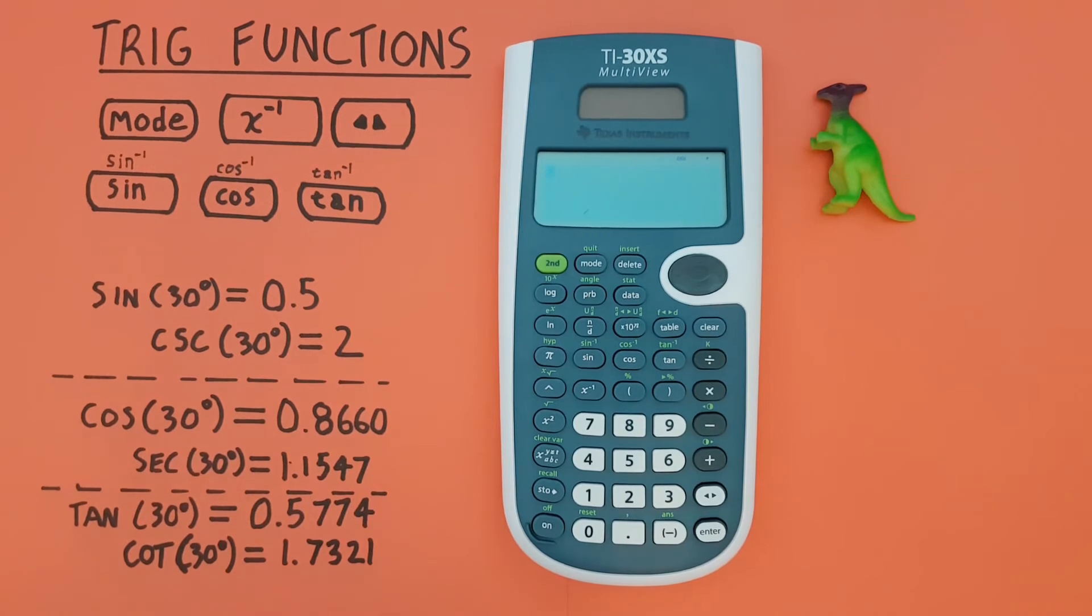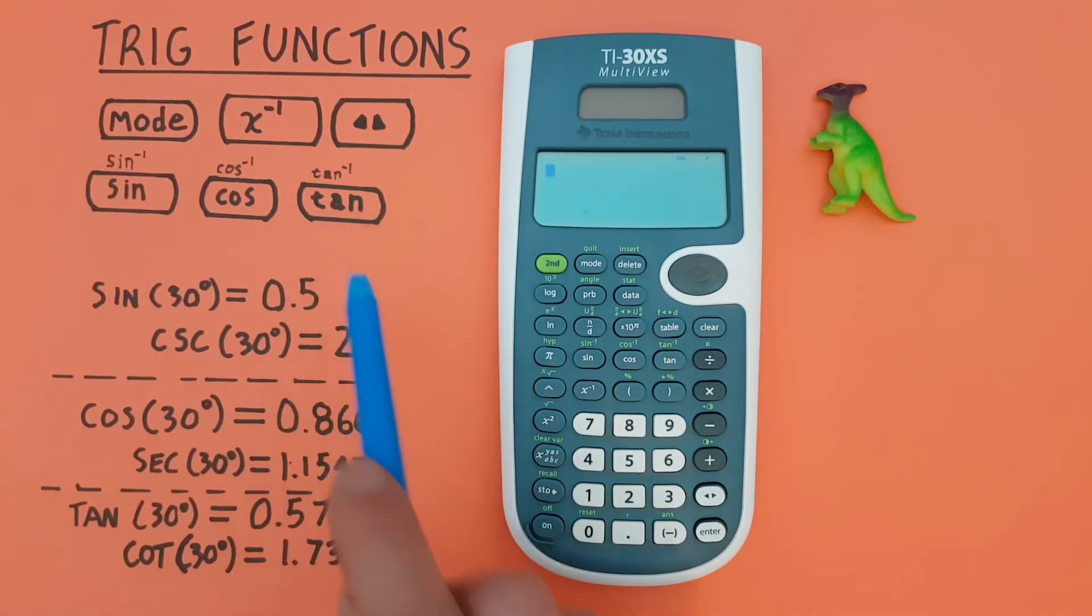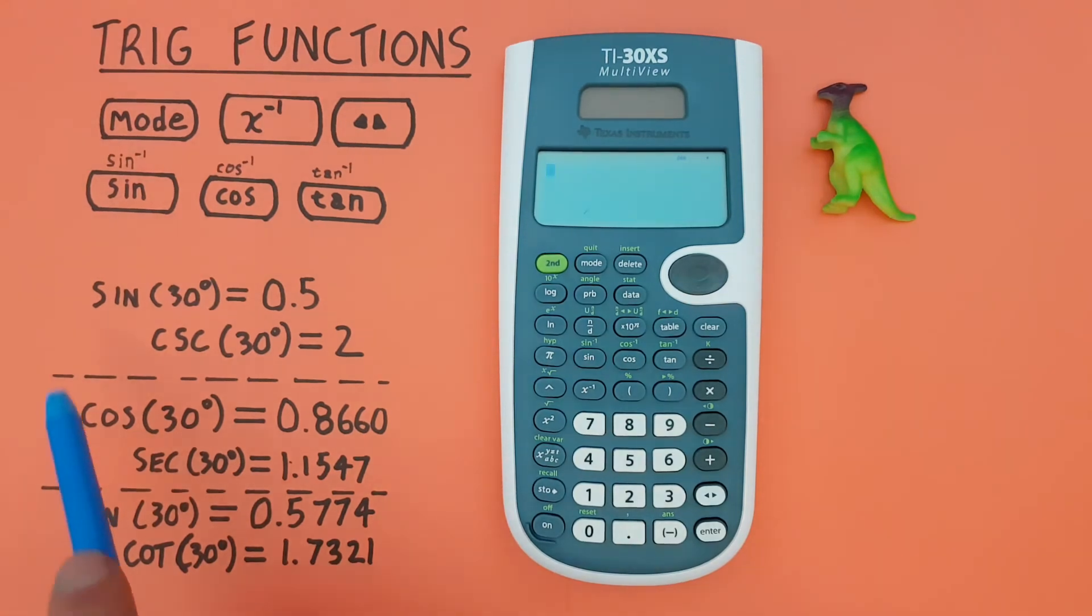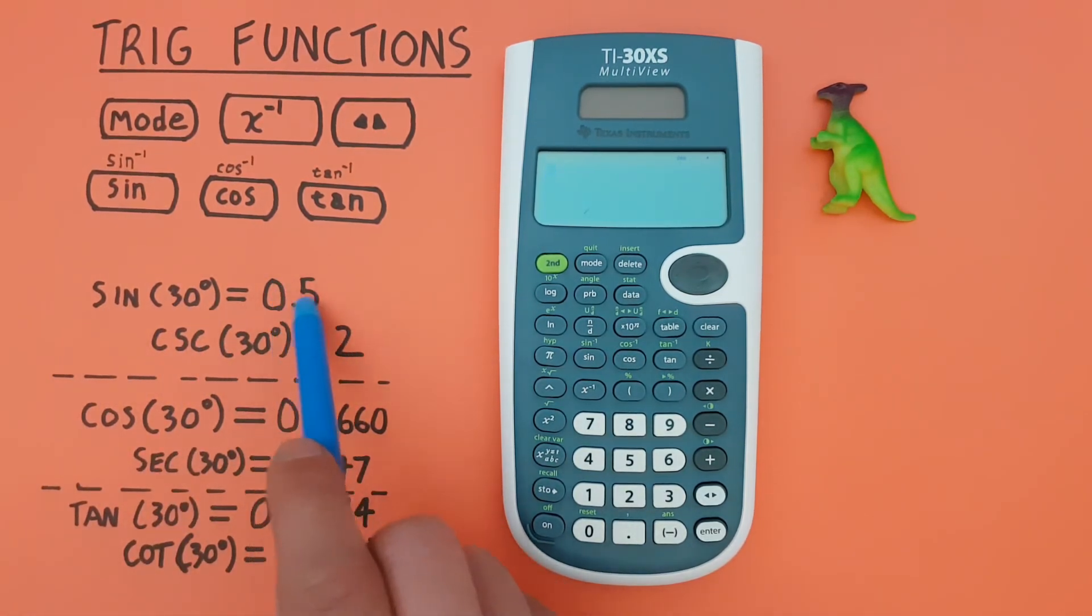We can also use the arc sine, arc cos, and arc tan functions, which are the second functions of these keys, to take this question in reverse, to go from the 0.5 and figure out how many degrees were used. For example, if we wanted to find the arc sine of 0.5, to figure out how many degrees were used, we would go second, sine,